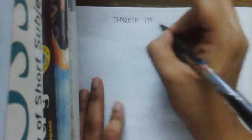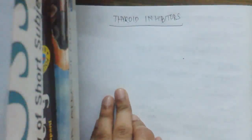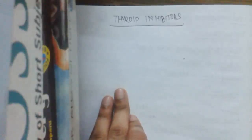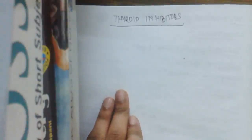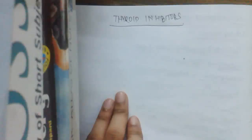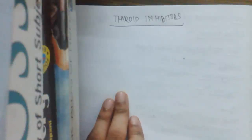Why are thyroid inhibitors useful to us? In pharmacology, it is better to question each and every point with 'why' so that you get a good reliable answer. Thyroid inhibitors are used for thyroid toxicosis or hyperthyroidism. In hyperthyroidism there is increased thyroid hormone — that is thyroxine (T4) and triiodothyronine (T3). If there is excess, it is important to cut down or inhibit it, so certain drugs help us decrease the thyroid hormone level.